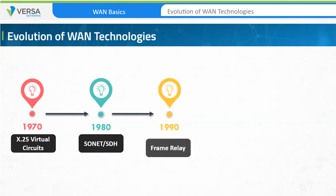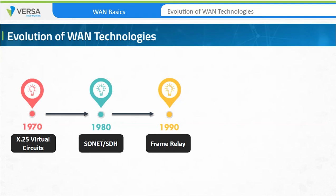Later, in the beginning of 1990, Frame Relay was introduced, which introduced the concept of pooled bandwidth. Service providers were able to utilize multiple T1 or T3 links and share the bandwidth among multiple customers while maintaining the integrity of the WAN link. This resulted in a lower cost of ownership, a simplified infrastructure, and better performance compared to X.25-based designs. It was deployed widely in enterprise networks and was a very popular option.